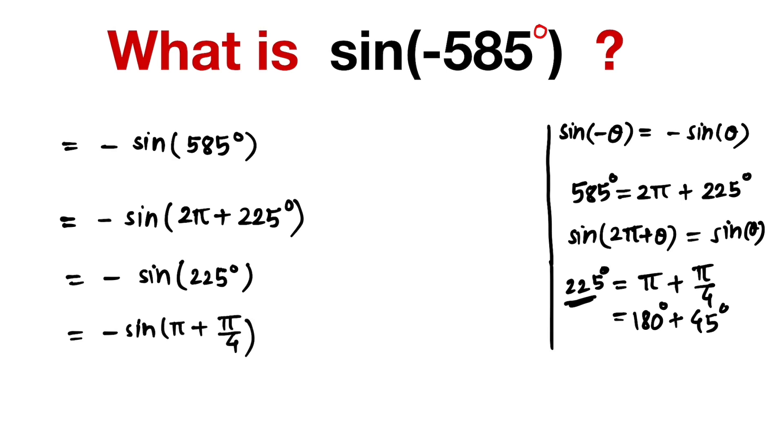And that is the same as sine of π/4, because sine of π plus theta equals minus sine theta. Multiply by minus 1, so this is plus sine theta. By using this formula, we get sine π/4.